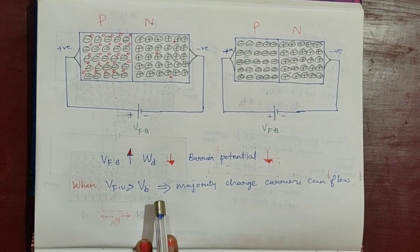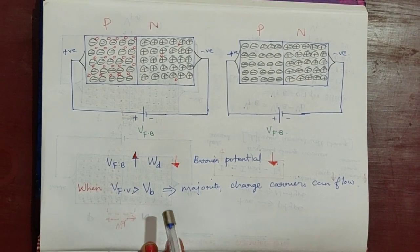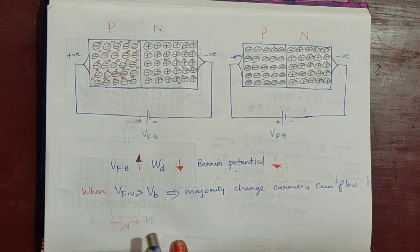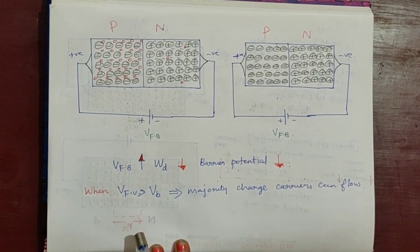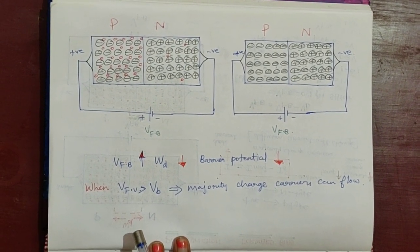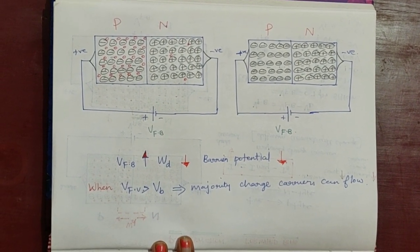In my next video, please check the reverse bias conditions for the PN junction diode.